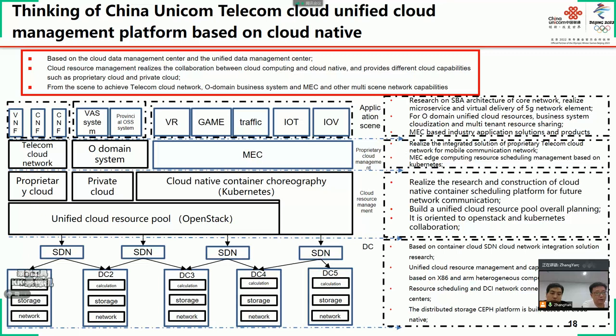The middle layer is the cloud resource layer. You can see the virtual machine cloud platform based on OpenStack, and there is industry cloud, private cloud, and container platform on OpenStack. There is also a physical container platform developed independently of OpenStack. In this layer, we first need to build the container platform. For the bottom layer, it could achieve unified management and unified orchestration capability of unified cloud resource pools on data center resources.